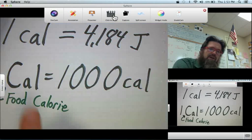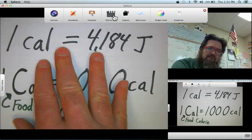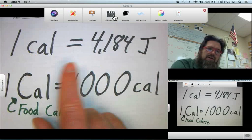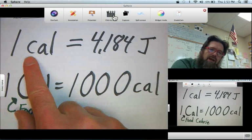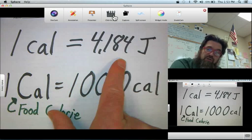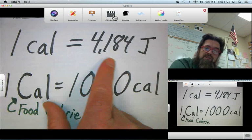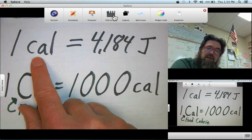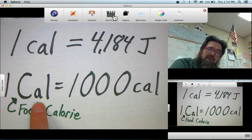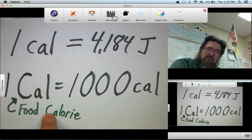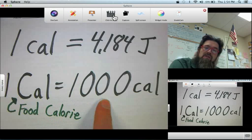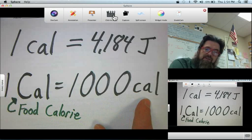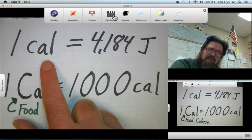I've put the essential information that we remember on this sheet. One Chemistry Calorie equals 4.184 Joules. These are the units that we typically use to measure heat or heat energy in Chemistry. Now, a Dietary Calorie or a Food Calorie is equal to 1,000 Chemistry Calories. A Chemistry Calorie is the amount of heat it takes to raise the temperature of 1 gram of water, 1 degrees C.